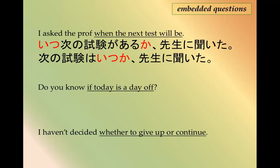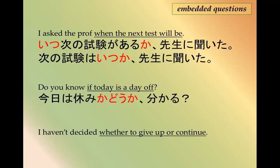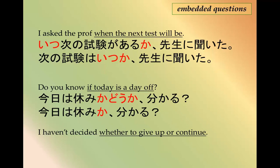Notice that you have か in the sentence as well — that's the question marker. For example: 'Do you know if today is a day off?' We don't have a question word in this one. We have か indicating the question, or かどうか — whether it is or not. Either one works just fine for this.